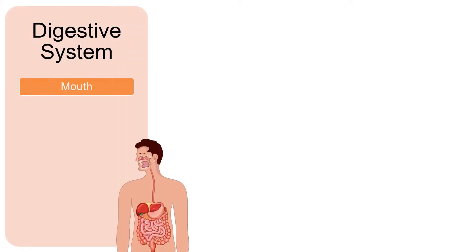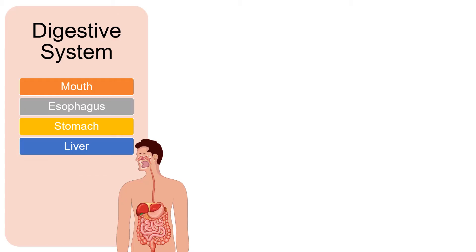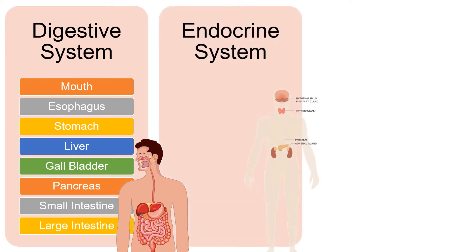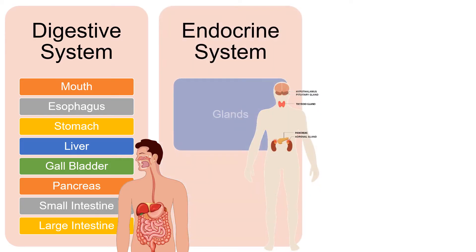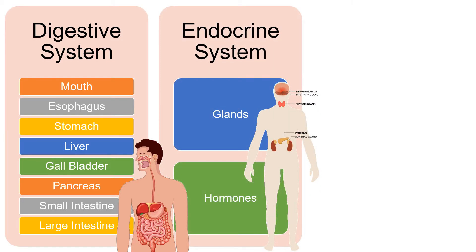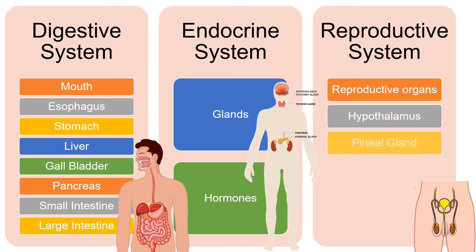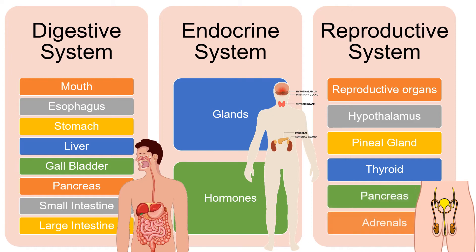The organs under the digestive system are the mouth, esophagus, stomach, liver, gallbladder, pancreas, and small and large intestines. The endocrine system is composed of organs and hormones, while the reproductive system is composed of reproductive organs and endocrine glands such as the hypothalamus, pineal gland, thyroid, pancreas, and adrenals.